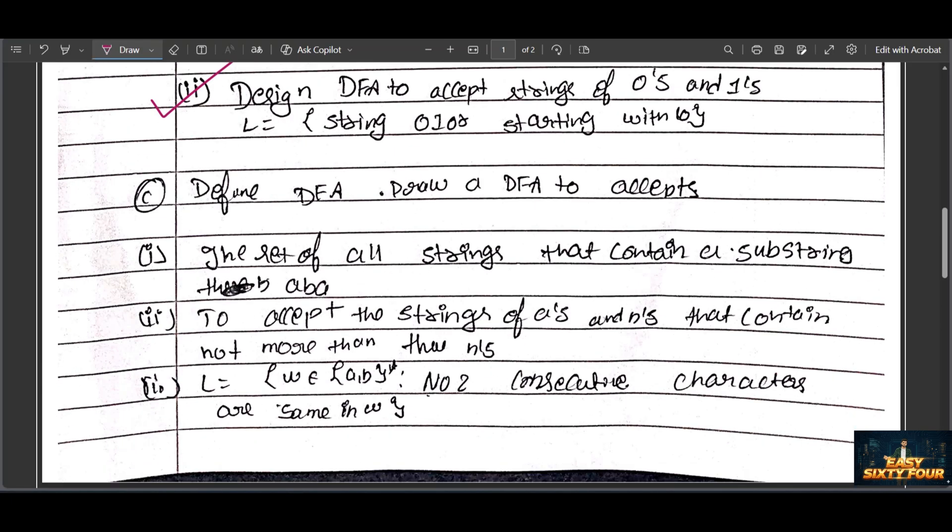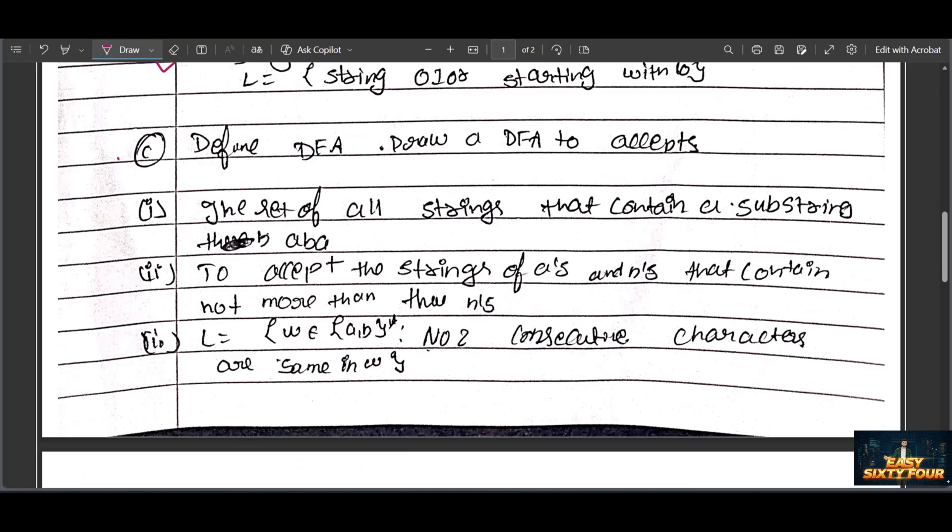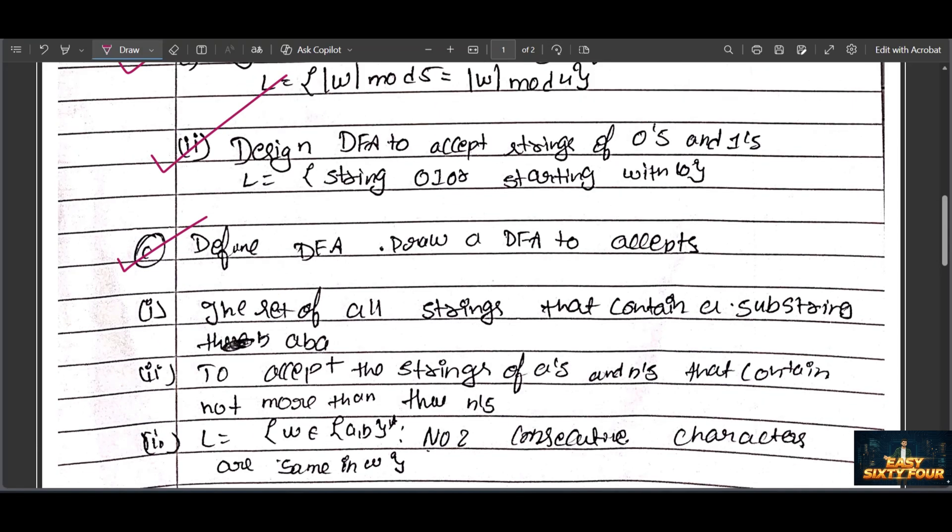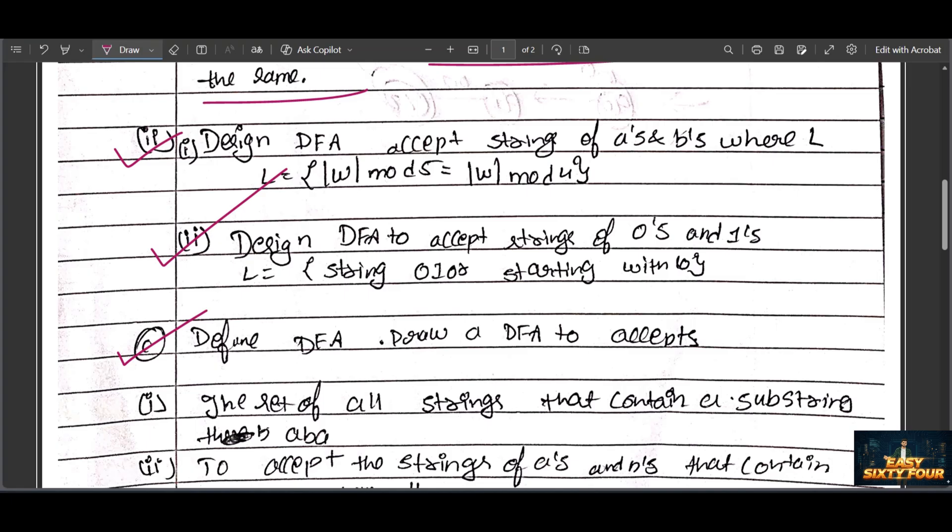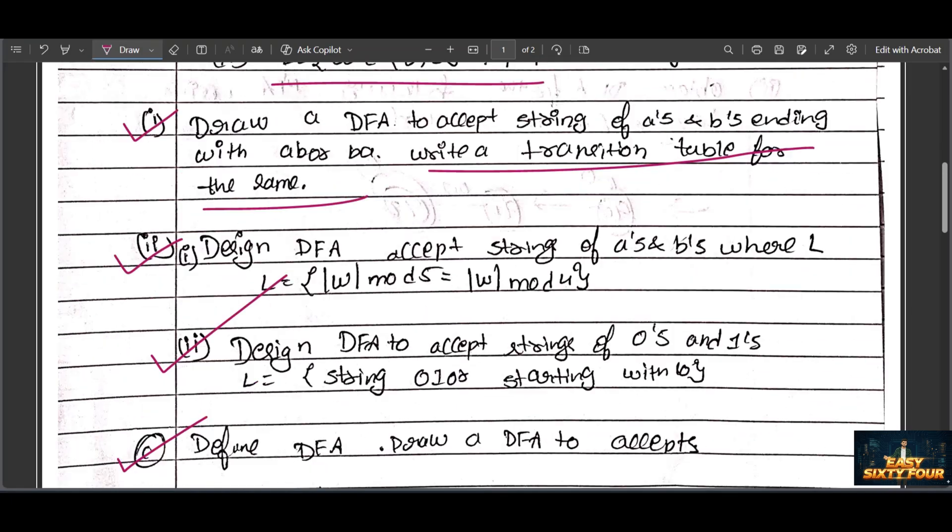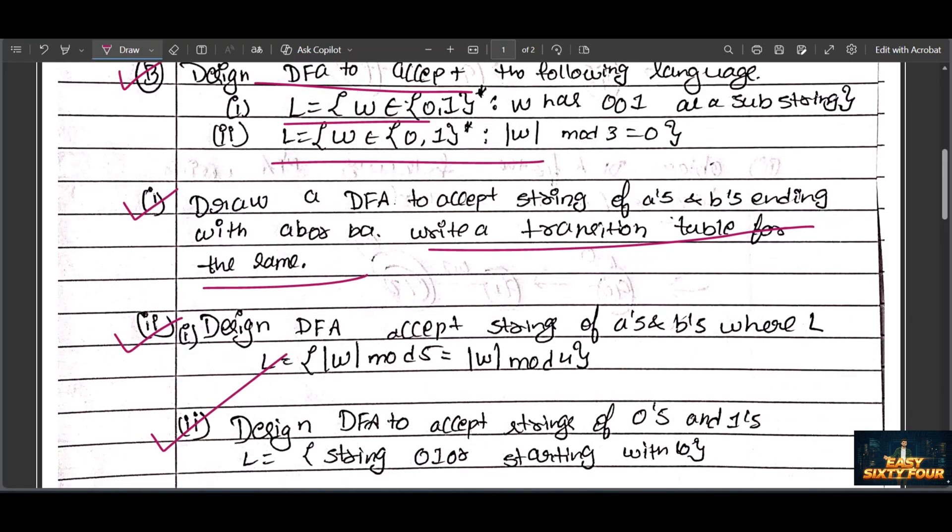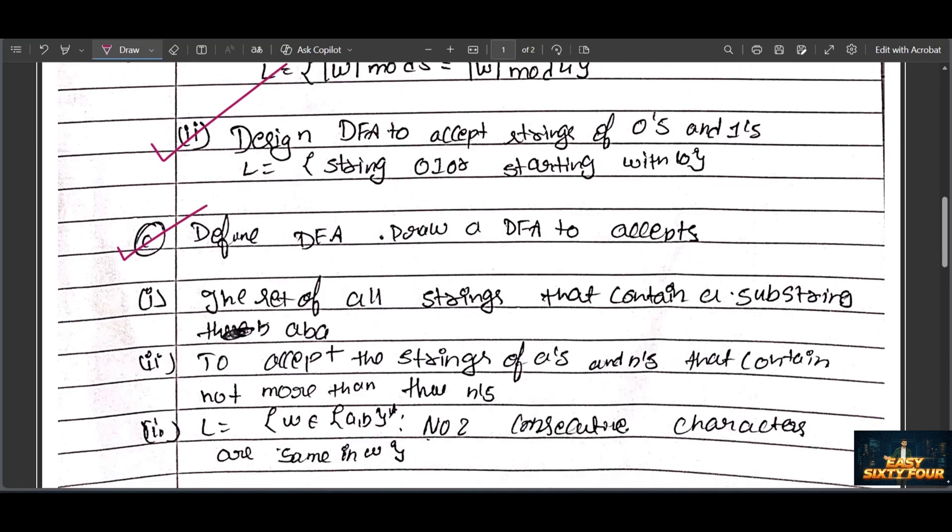These are sub-questions - these three questions have sub-questions. After that, questions 1, B, and C - in these three questions you can get one question guaranteed. One more important question is there; I'll share it in Telegram because it's asked many times in your internals.